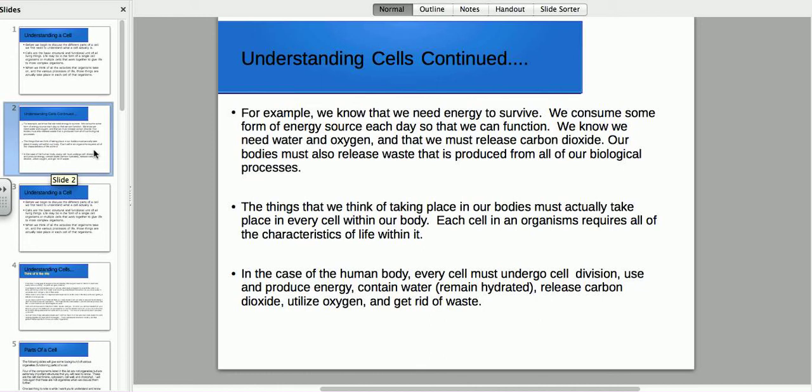Well, when you think about that, that you need that stuff to survive, that's because every cell in your body needs that to survive. So the things that we think about taking place in our bodies actually have to take place in every single cell. So in the case of the human body, for example, every cell must undergo cell division, because you know that for the human species to continue, you have to have reproduction. Well, each cell has to also have reproduction. They all have to use and produce energy. They all have to contain water. They have to remain hydrated.